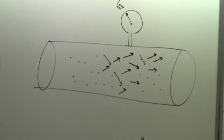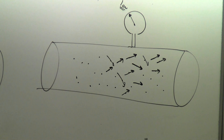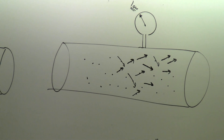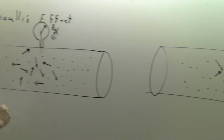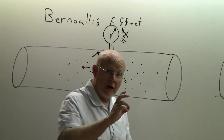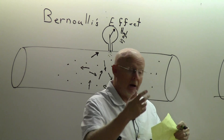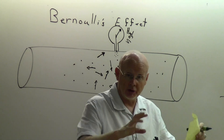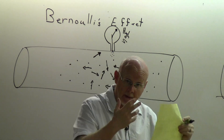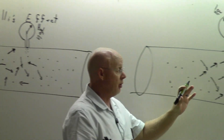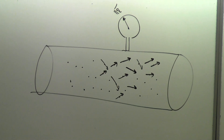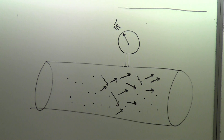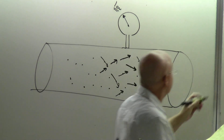What that means for the pressure gauge is the molecules don't really go up as much as they used to. They don't hit the pressure gauge as much, and because of that the pressure then drops. Something where the molecules are stationary would have a high pressure, but once the molecules in the fluid start moving, the pressure goes down. This is referred to as the Bernoulli effect.